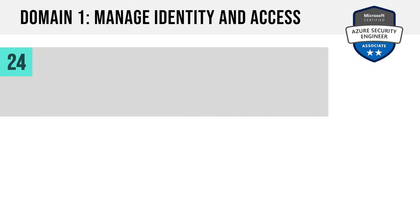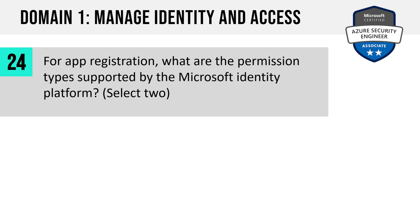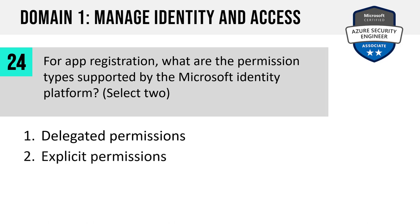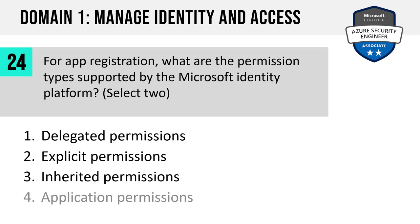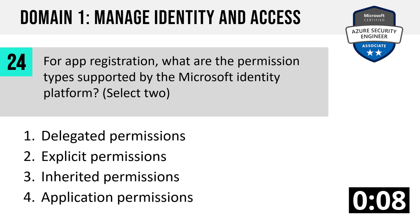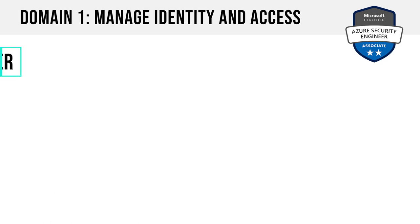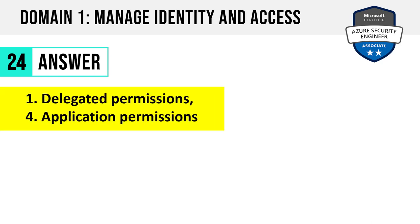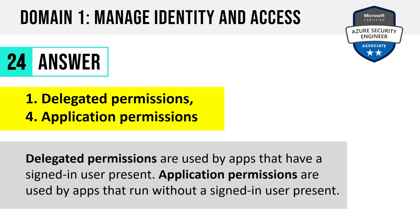Question 24. For app registration, what are the permission types supported by the Microsoft Identity Platform? Choose two: delegated permissions, explicit permissions, inherited permissions, or application permissions. The answer is delegated permissions and application permissions. Delegated permissions are used by apps that have a signed-in user present — a human at the keyboard. Application permissions are used by apps that run without a signed-in user present, such as apps running as a service.